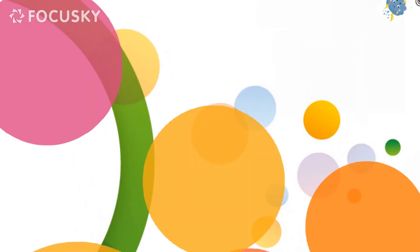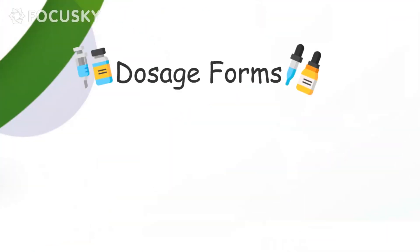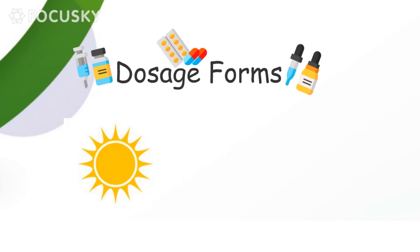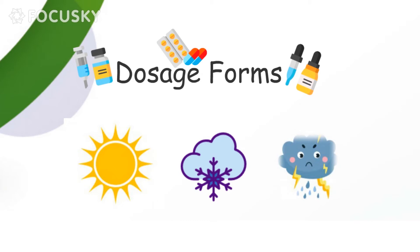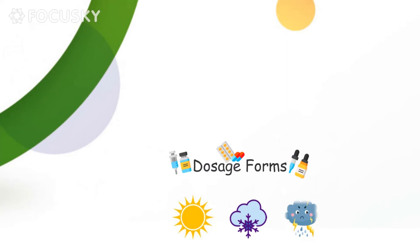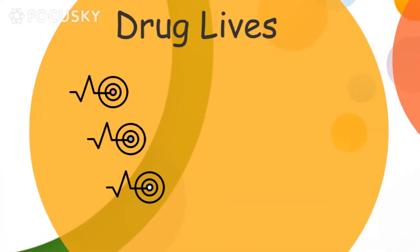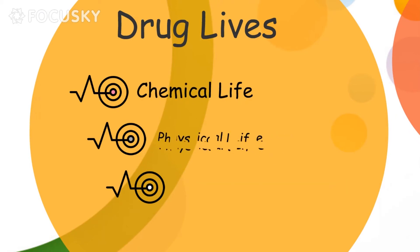So what happens if not? Well, all dosage forms — the forms into which medicines are presented, whether tablets, capsules, syrups, etc. — are affected by environmental conditions like heat, cold, and moisture. Those factors can have an impact on one or more of the three lives of drugs. Funny, right? But yeah, drugs have three lives: chemical, physical, and aesthetic.